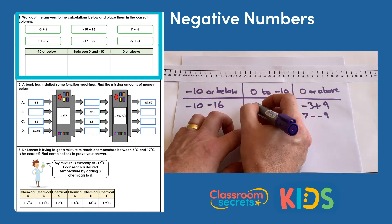Our sixth calculation is negative 9 add negative 4. Starting at negative 9, adding a negative value means we're doing a takeaway. Taking away 4 from negative 9 brings us to negative 13. So negative 9 add negative 4 also goes in the negative 10 or below column.